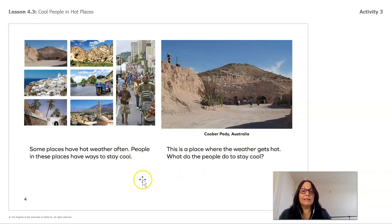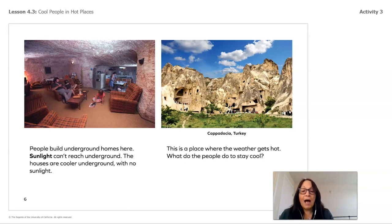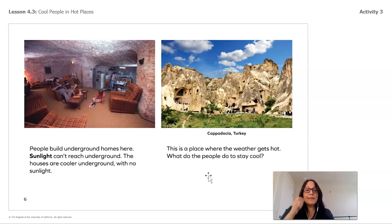This is Australia, which is very, very hot. People build underground homes here. Sunlight cannot reach underground. The houses are cooler underground with no sunlight—because it's underground, the sun cannot come in and make them feel hot. Over here is Cappadocia, Turkey, another place where the weather gets hot. I'm guessing that they also build homes underground to stay cool.